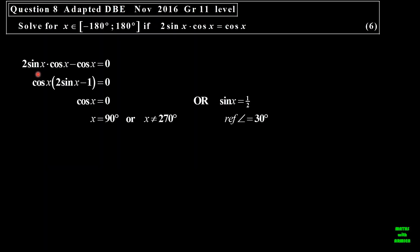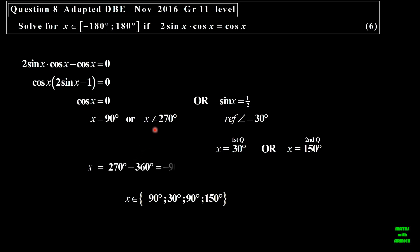Let's consider this example. I've got 2 sine x cosine x minus cosine x equal to 0. I'll use the zero product and I need to get factors. Cosine x is the common factor. So cosine x can be 0, or 2 sine x minus 1 equal to 0, that means sine x equal to a half. Cosine is 0 at 90 degrees and 270, but 270 is outside the interval. The reference angle is 30. Sine is positive in the second, so 180 minus 30 is 150. So 30 is within the interval, 150 is within the interval, and 90. For negative angles: 270 minus 360 gives me negative 90. So I can have negative 90, 90, 30, and 150, but 150 and 30 will not generate negative angles that fit within that interval.